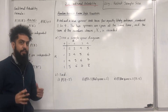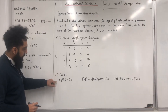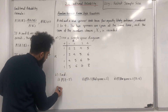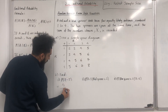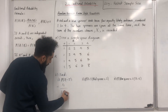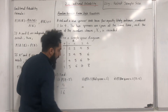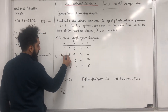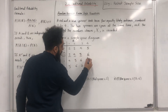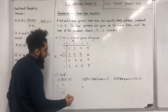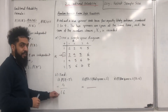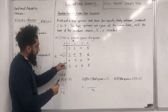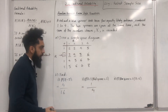That is the completed sample space diagram. For part one, probability X equals 5: there are 4 outcomes where the sum is 5, out of a possible 16 total outcomes, giving 4/16. For part two, probability X equals 3 given that the red spinner is 2: the red spinner showing 2 gives 4 possible outcomes, so the sample size reduces from 16 to 4. From those 4, the sum equals 3 in 1 case, giving 1/4.